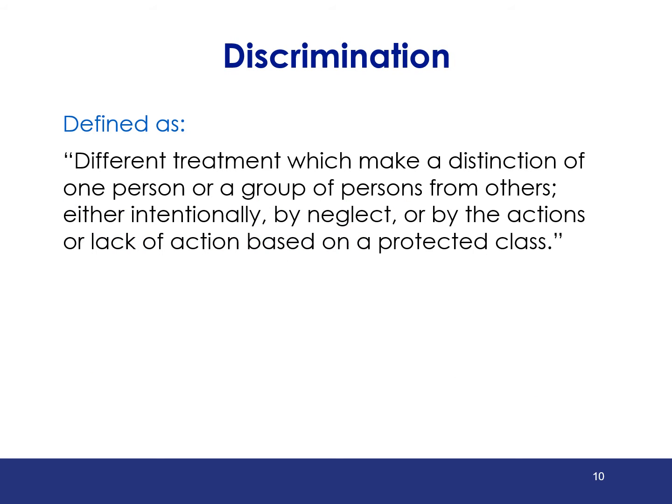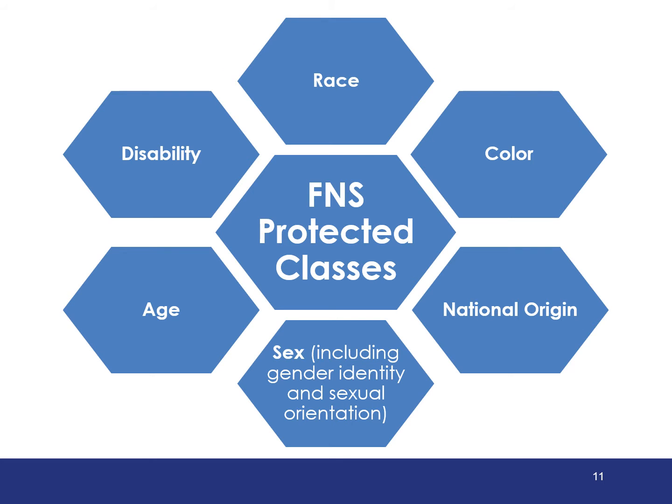Now that we have reviewed civil rights legislation and authorities, let's take a look at the definition of discrimination. Discrimination is defined as different treatment which makes a distinction of one person or a group of persons from others, either intentionally, by neglect, or by the actions or lack of actions based on a protected class. A protected class refers to any person or group of people who have a characteristic for which discrimination is prohibited based on law, regulation, or an executive order.